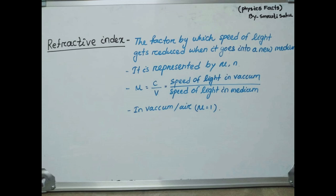What do you mean by refractive index? When light goes into a new medium, the speed of light gets reduced. How much the speed of light reduces — that factor is known as refractive index. We compare the ratio of speed of light in vacuum to the speed of light in a medium, and that is known as absolute refractive index, represented by mu or n. In air or vacuum, the refractive index is equal to 1.